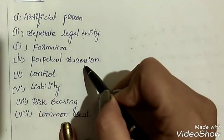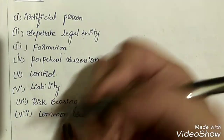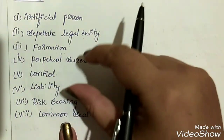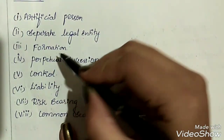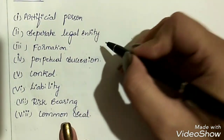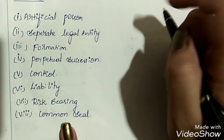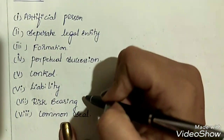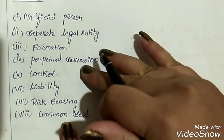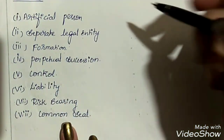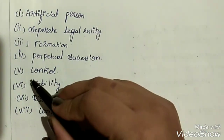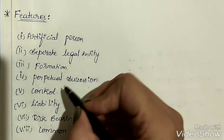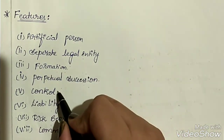Next feature is perpetual succession. This type of company is a creation of law and can be liquidated only by the act of law. Death, insolvency, lunacy, or incapacity of any owner will not affect the continuity of the business. Even if all its owners die, the business will continue to exist with new owners. Control and management of business activities lies in the hands of the board of directors.